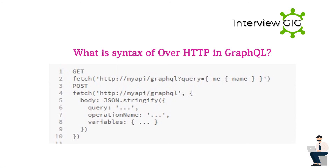What is the syntax for GraphQL over HTTP? GET: fetch /my-api?query={ me { name } }. POST: fetch /my-api with body JSON.stringify({ query: "...", operationName: "...", variables: {...} }).